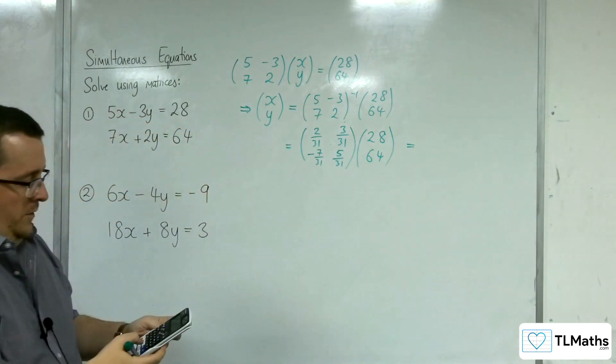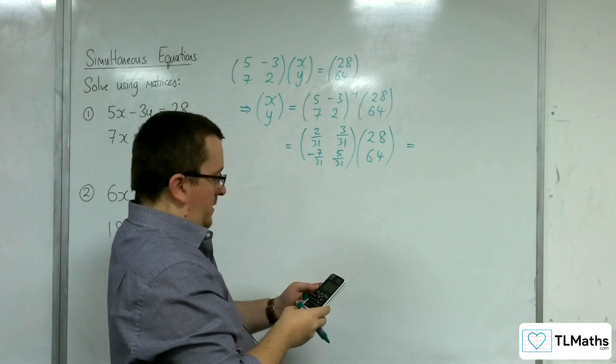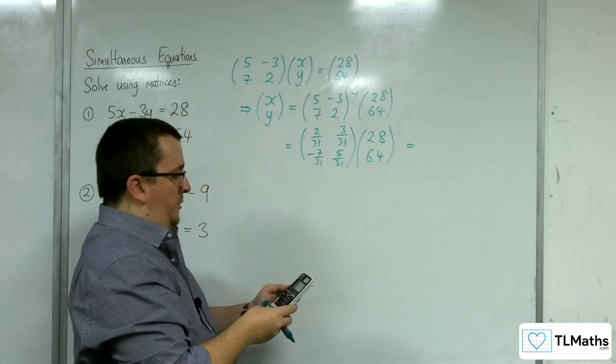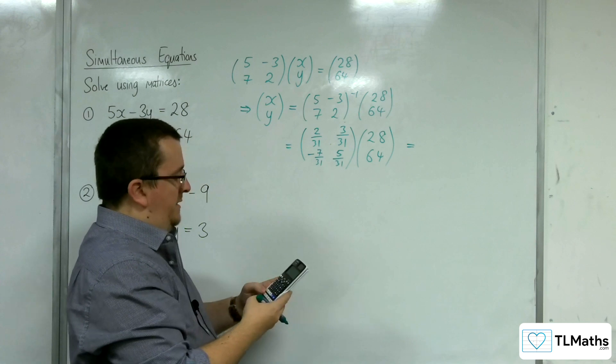Let's define another matrix, matrix B. This has got 2 rows and 1 column, 28 and 64.